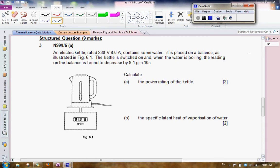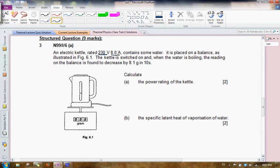Now, let us look at question 3 of your class test 2. In question 3, we have an electrical kettle that's rated 230 volts at 8 amperes. It contains some water. It is placed on a balance as illustrated in the diagram below. The kettle is switched on and when the water is boiling, you are told that the reading on the balance is found to decrease by 8.1 grams in 10 seconds.